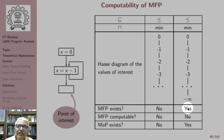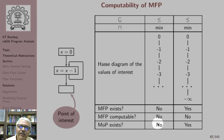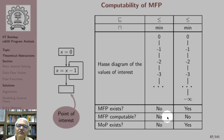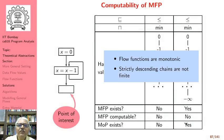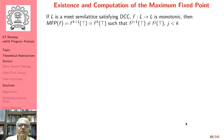With widening, MFP is computable because MOP exists in that setting. Without adding −∞, there is no hope of computing MFP even with widening. Flow functions here are monotonic, but strictly descending chains are not finite — that is the second reason MFP may not be computable. Widening is not covered in this course.